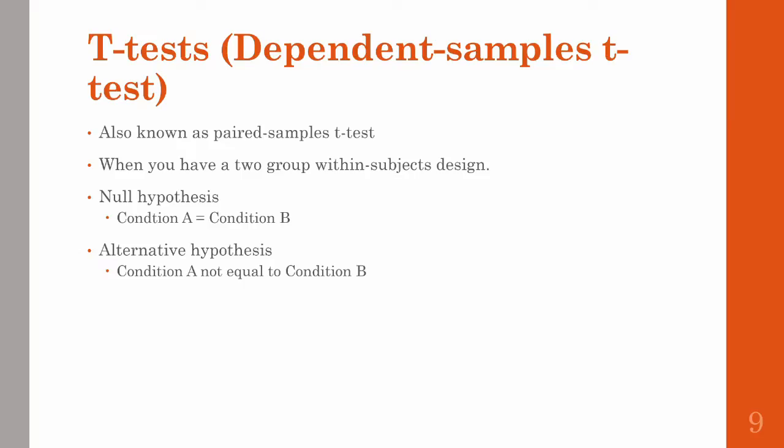The next kind of t-test is a dependent samples t-test, also called a paired samples t-test. This is when you have a two-group experiment that's run within subjects — so participants participating in both groups. Here we specify our null as both conditions being equal to each other, and then our alternative hypothesis as the two conditions not being equal to each other.